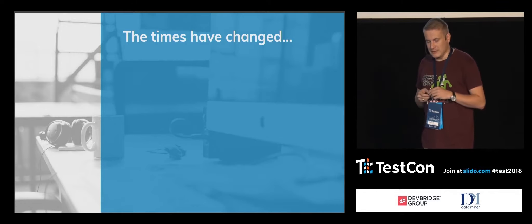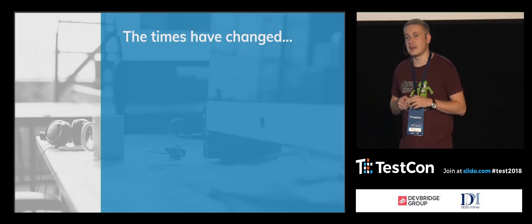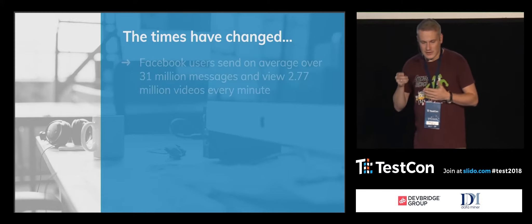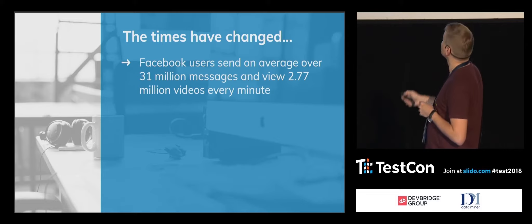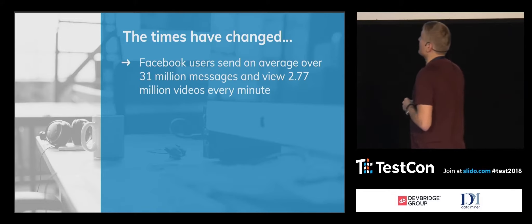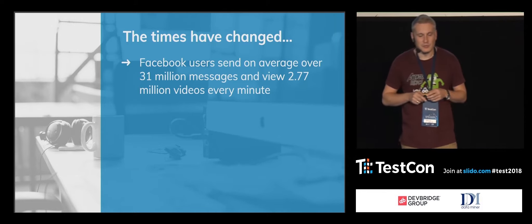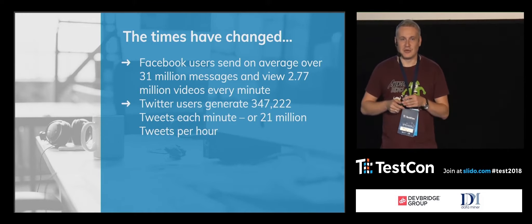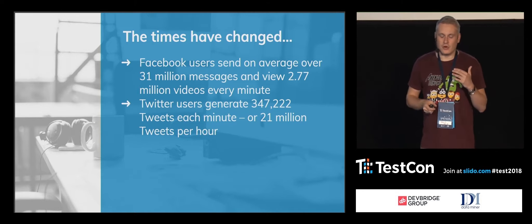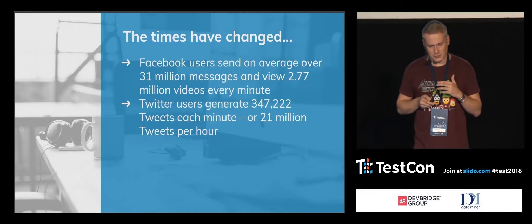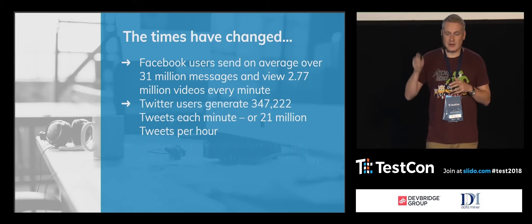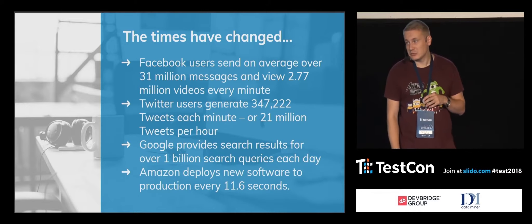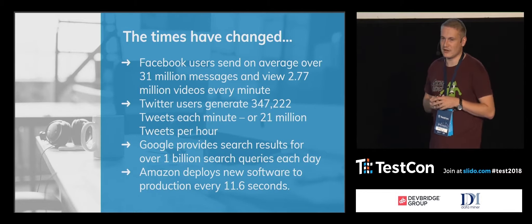But times are changing now. We have a much more dynamic world, much more changes, and everything is going at a much faster pace. Some interesting facts: Facebook has 2.77 million videos every minute and 31 million messages every minute. Twitter generates almost 350,000 tweets per minute. Google provides results for over 1 billion search queries each day. And Amazon deploys new software to production every 11 seconds.